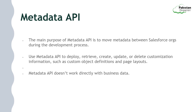Now moving on to Metadata API. The main purpose of Metadata API is to move metadata between Salesforce orgs during the development process — for example, for deployments. It helps you deploy, retrieve, create, update, or delete customization information such as object definitions and page layouts. Since it deals with metadata, we cannot use Metadata API to work with the actual data in Salesforce; it deals strictly with customization information.